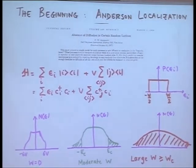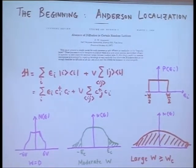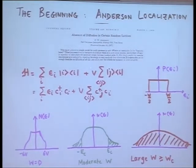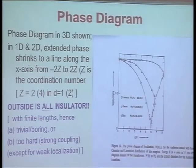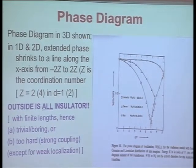There's only one parameter in the problem — that is the ratio of W over V. I will be using that as a number in many of the slides, so when you see W equals a number, it means that's the ratio of W over V, the hopping integral. I'm using Anderson's original notation; nowadays people use T for that. The phase diagram in three dimensions as a function of energy and disorder is plotted here.